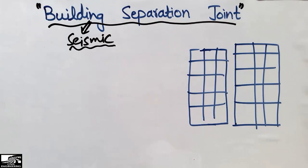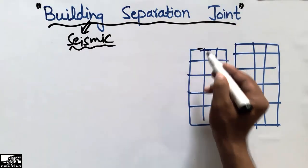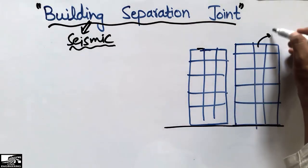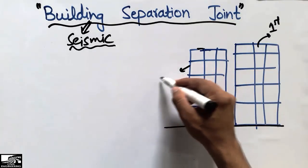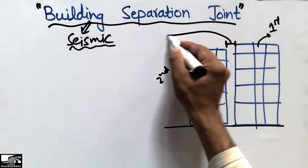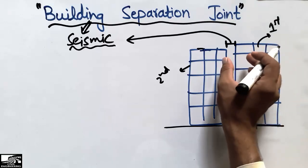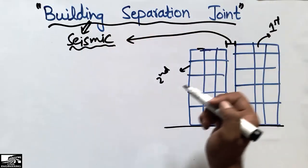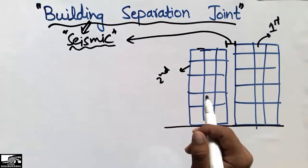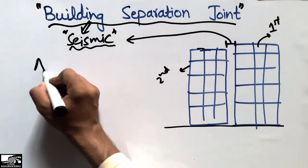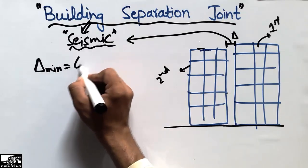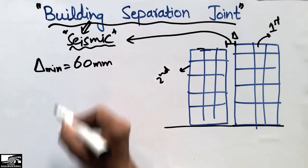The seismic separation joint states that according to standards, the distance between two buildings — this first building and this second building — should maintain a minimum separation. This distance is represented by Delta and should be a minimum of 60 millimeters according to standards. We must provide this distance between the two buildings.